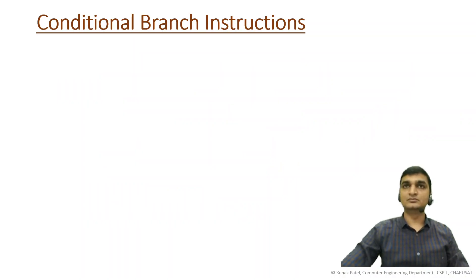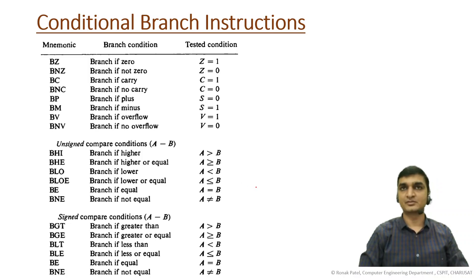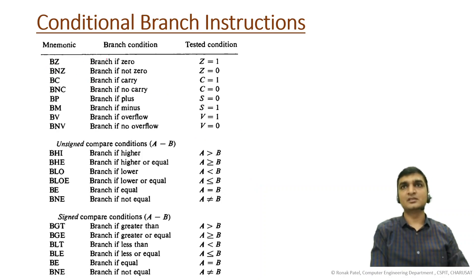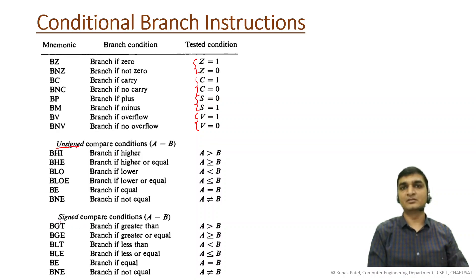Now let's see the conditional branch instructions: branch if zero, branch if not zero, branch if carry, branch if not carry, branch if plus, branch if minus, branch if overflow, and branch if no overflow. These check the Z flag, the carry flag, the sign flag, and the overflow flag respectively. There are also branches for unsigned and signed number comparisons.